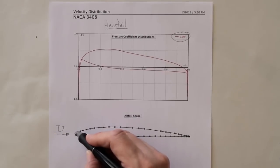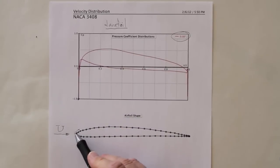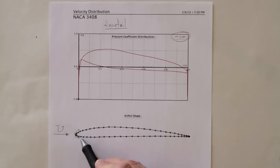But very quickly the flow accelerates around the nose of the airfoil, and by Bernoulli's equation, by Bernoulli's effect, when it accelerates the pressure drops quite rapidly.